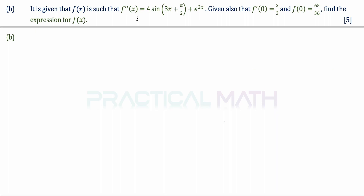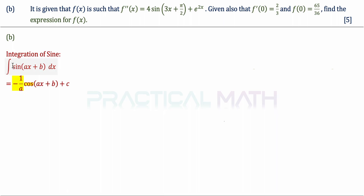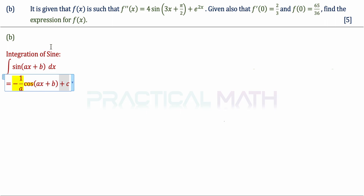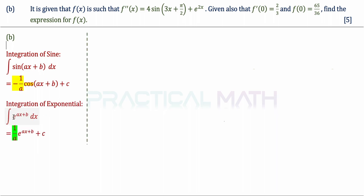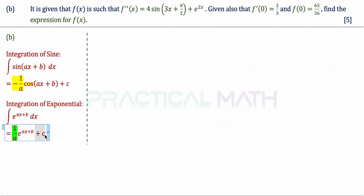Before we dive into the solution, let us revisit the integration of a sine function and an exponential function. Integrating sin(ax + b) dx gives negative cos(ax + b) divided by a, plus c. Similarly, integrating e to the power of ax + b with respect to x gives e to the power of ax + b divided by a, plus c, where a is the differentiation result of the power.